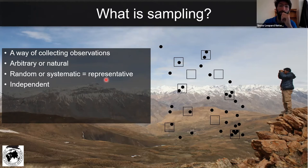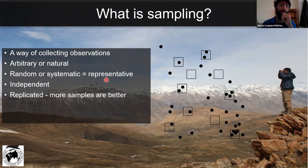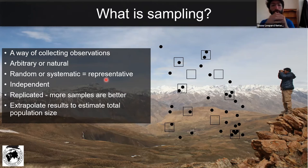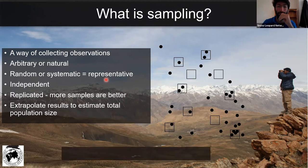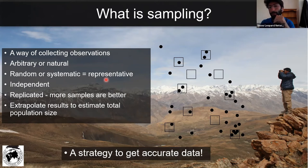Samples have to be independent from each other so we don't have pseudo-replication. We can discuss that if you want. And as I said, more samples the better, because higher sample size means your data is more likely to be precise. You can then use your sample to extrapolate and estimate results to larger population sizes. So basically, sampling — or representative sampling especially — is a strategy to get as accurate data as possible.